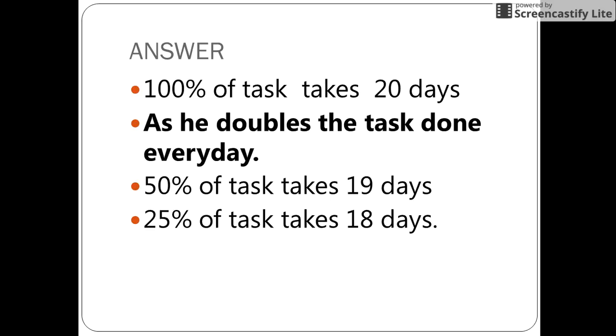If he completes 100% of the task in 20 days, so surely he must have completed 50% of the task in 19 days since on the 20th day he would double the task done by him on the 19th day.